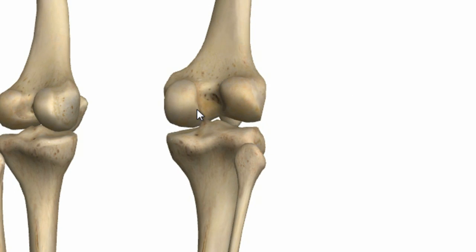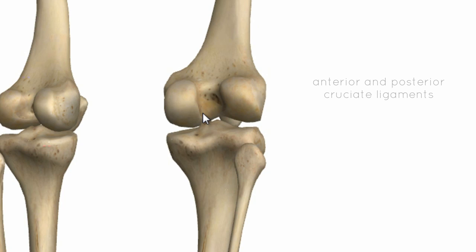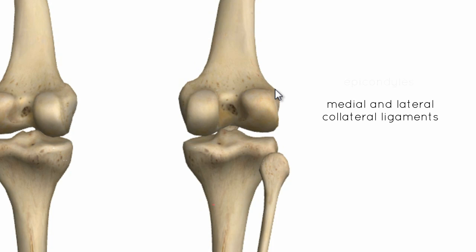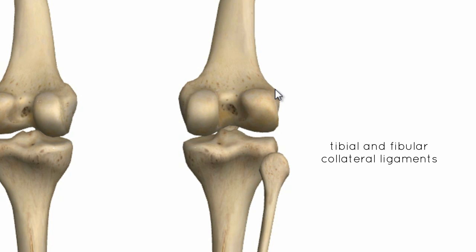This intercondylar fossa is the area where the anterior and posterior cruciate ligaments have their proximal attachment. Just above the condyles, you've got epicondyles. This is the site of proximal attachment for the collateral ligaments — the medial and lateral collateral ligaments, also called the tibial and fibular collateral ligaments.